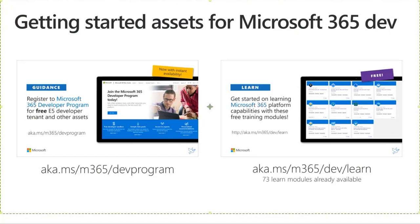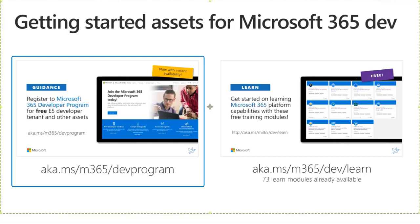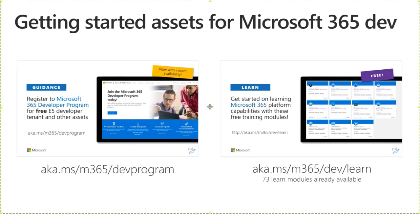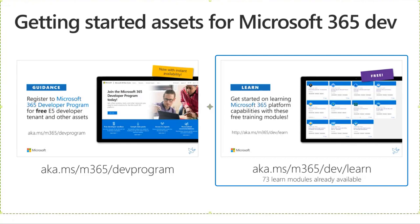We have a couple of other assets out there as well to ensure that you are successful, and part of that is making sure you have the tools. As long as you use the tenant for developer purposes, you can actually register and get an M365 developer tenant that is E5 capable, which means you can do a ton of different stuff with it. I use it myself as well, especially when I'm going to be doing demos and I want a nice pristine environment. You get that at aka.ms/M365/dev-program. And if you want to get from zero to hero really quickly, you can find samples at aka.ms/M365/dev/learn.